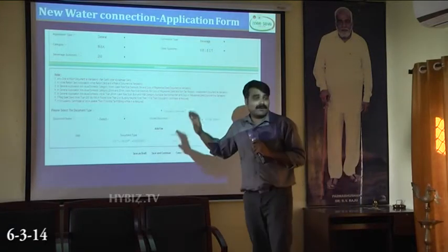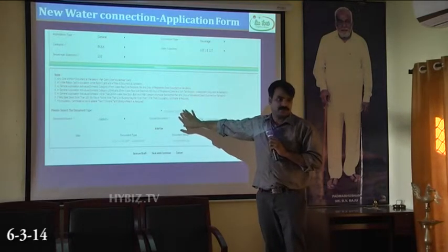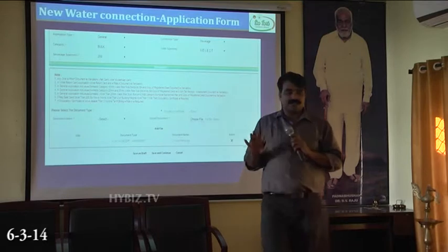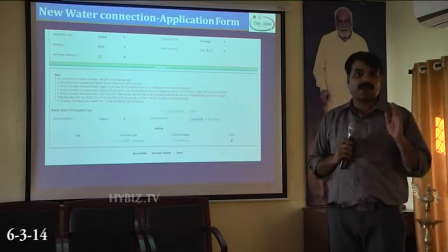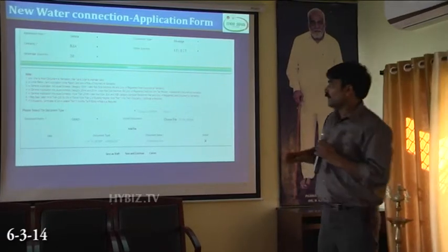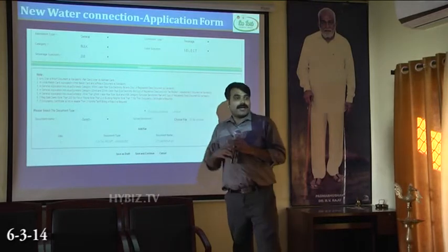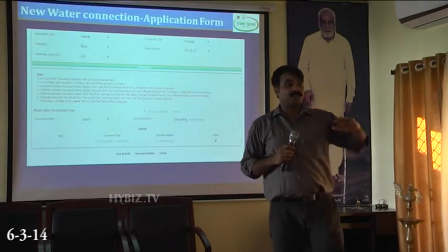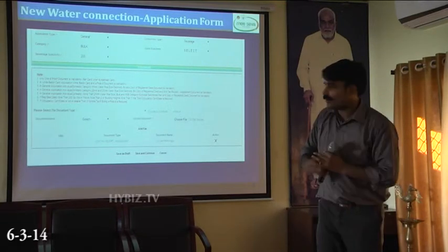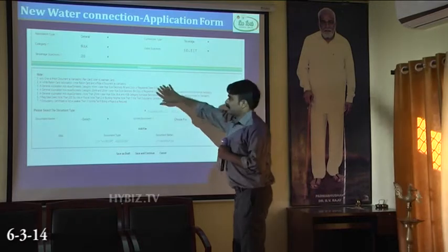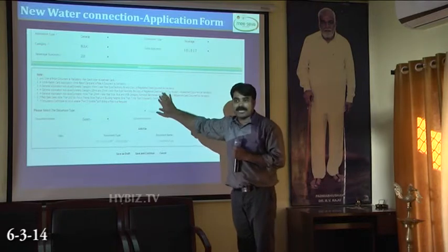Depending upon the type of connection you are applying for, there are various documents which you need to attach. For example, if you are applying for a connection with a ration card, you have to attach the ration card in your name. And if you are going for a commercial connection, the documents required are different. In this red text, we have explained what type of documents need to be attached for each type of connection.